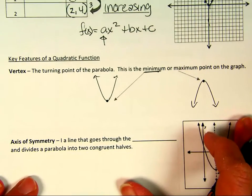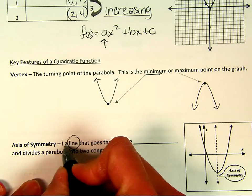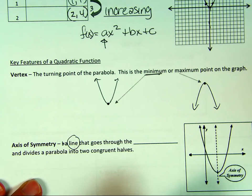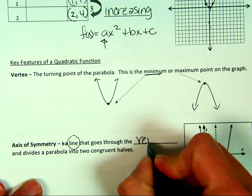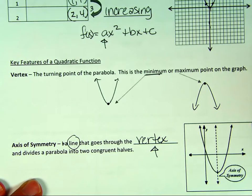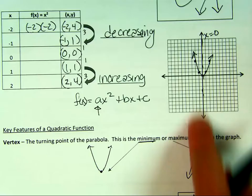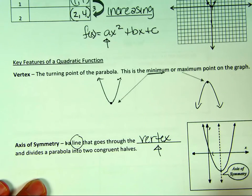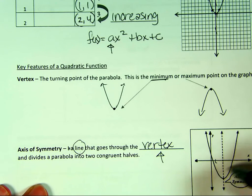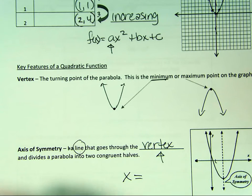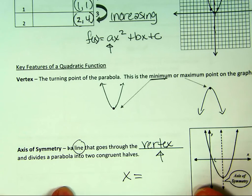The axis of symmetry is a line — don't forget it's a line. If I ask you what the axis of symmetry is and you just give me a number, that's a problem. You need to give an equation of a line, and it goes through the vertex. For our parent function, the axis of symmetry was x equals zero. For our parabolas that open up and down, the axis of symmetry will always be an equation that says x equals — it's always a vertical line.